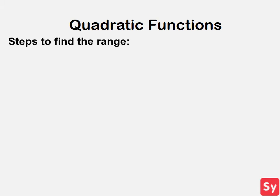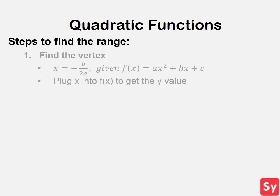There are a few steps to find the range of quadratic functions, so take note. First, you need to find the vertex. You can find the vertex by setting x equal to negative b over 2a to get the x-coordinate, and to get the y-coordinate, just plug x into the function.